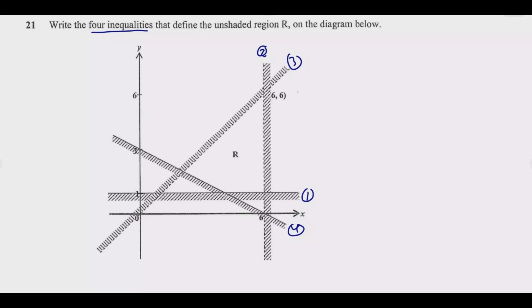Typically there is a vertical line and a horizontal line, then two others that slope either upward or downward. Lines three and four normally carry about one and a half marks each, while the other two are simpler, worth maybe one mark or even 0.5. Let us start with line one.